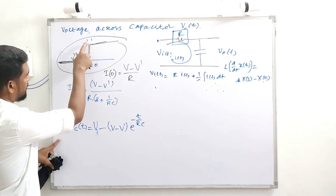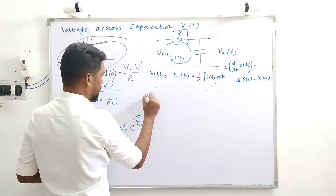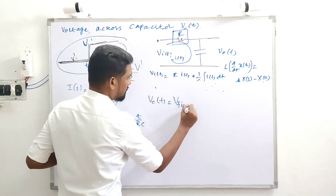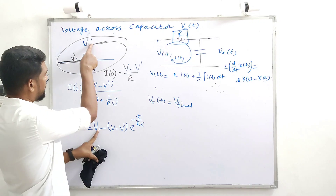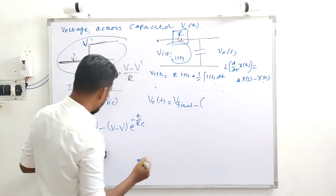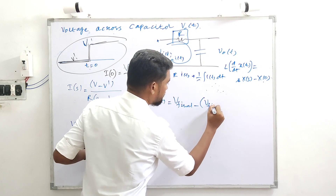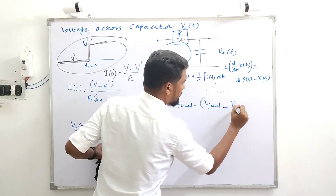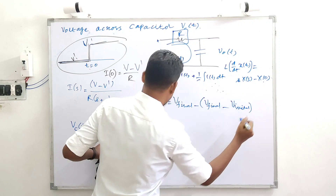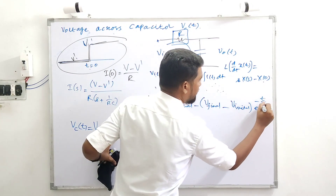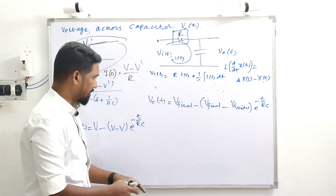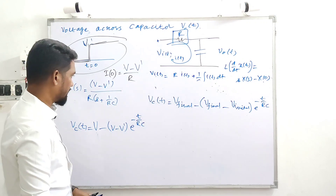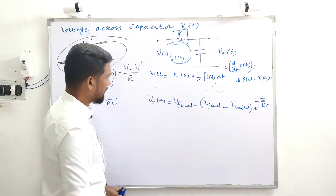So the final expression: VC of T will be equal to V final minus [V final minus V initial] into e to the power minus T by RC. This is the final expression for the RC network step response. This will be useful for multivibrator and other RC network topics coming next. Thanks for watching.